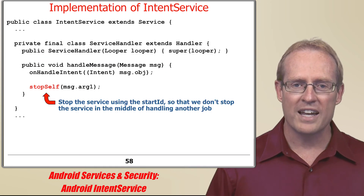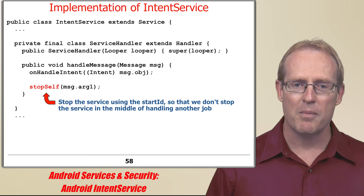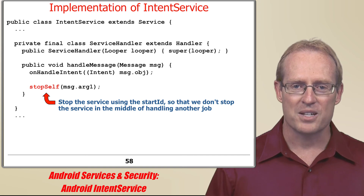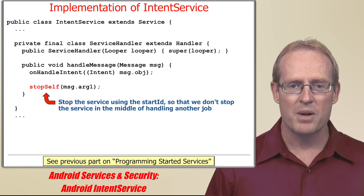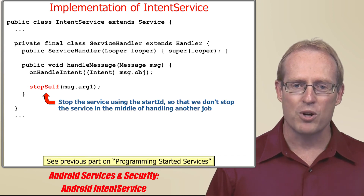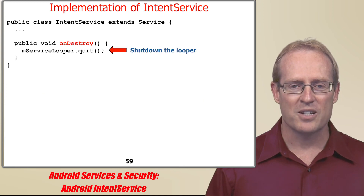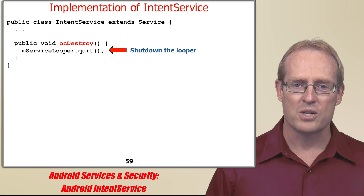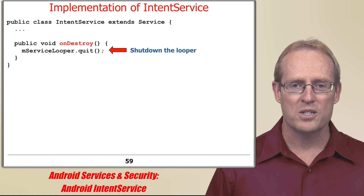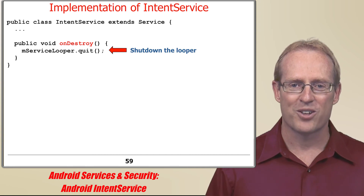When onHandleIntent returns, the stopSelf method is automatically called to stop the intent service, using the shutdown idiom presented in the previous video. After the intent service stops itself, Android's service framework invokes its onDestroy hook method, which quits the looper and thus shuts down the handler thread.